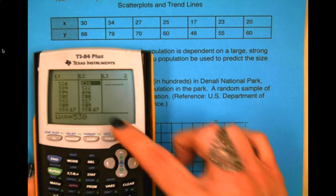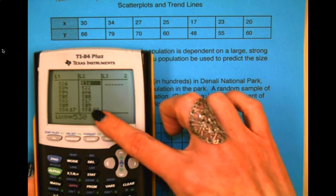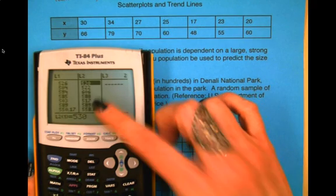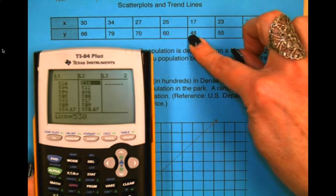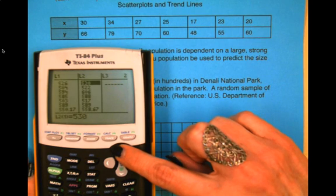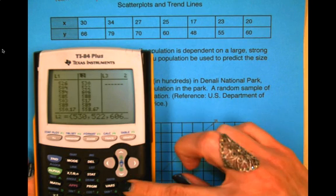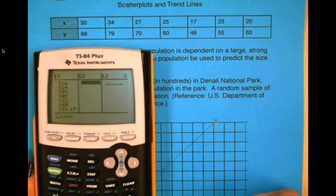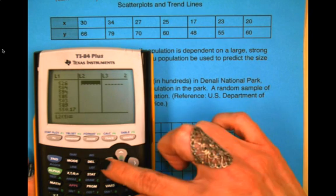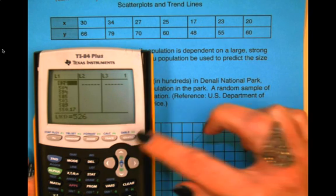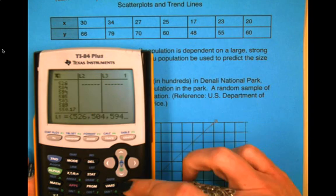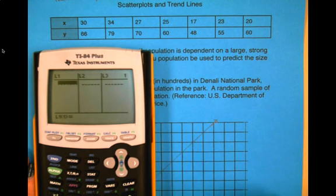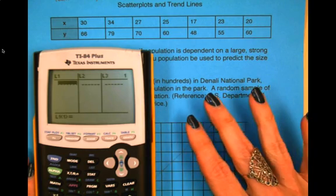You notice there is a lot of data already in my list. So I need to clear that out before I can start a new problem. To do that, I'm going to hit the up arrow, clear, and enter. That will clear that list out so I can start fresh. Hit the up arrow until the name of the list is highlighted, clear, and enter. Now I have a fresh screen ready to go.